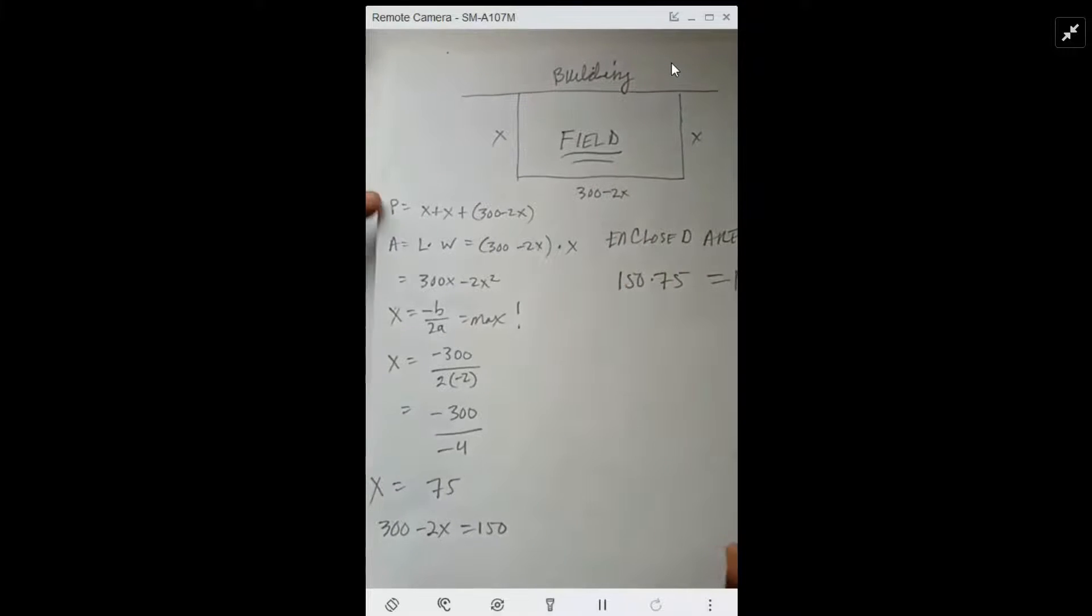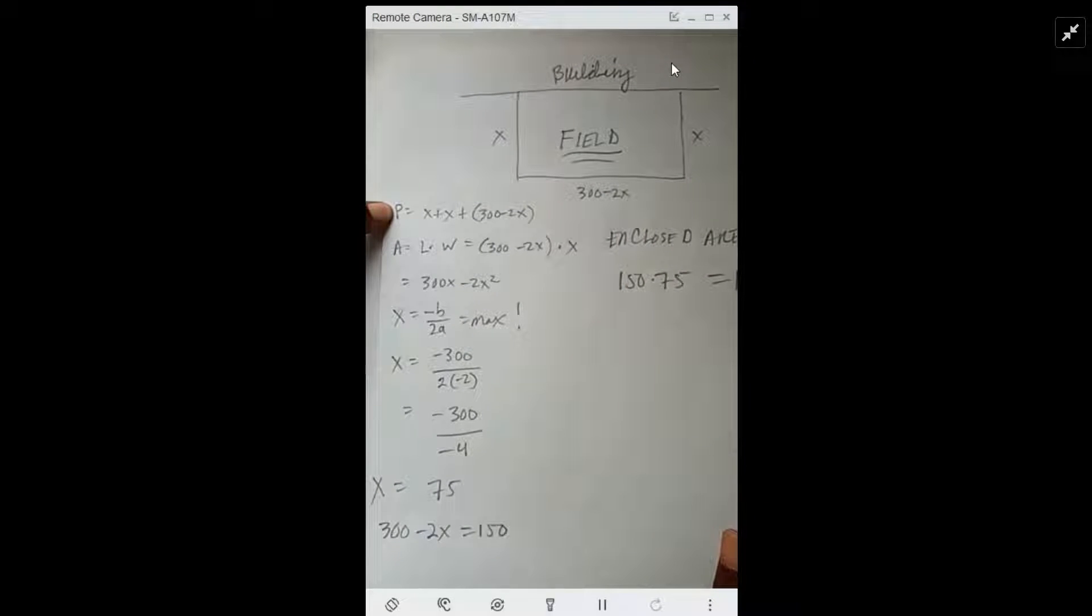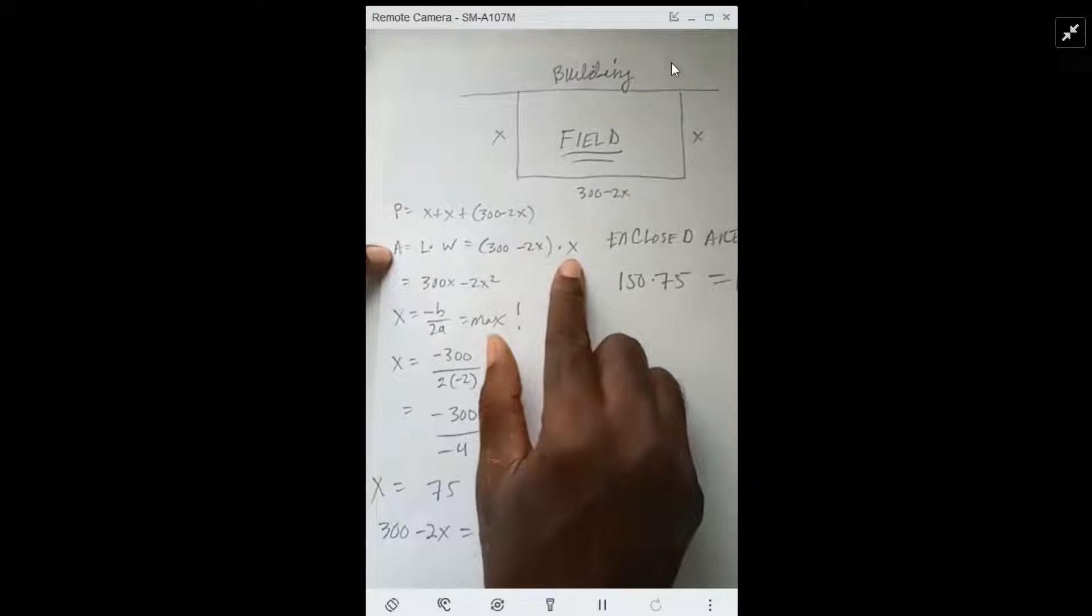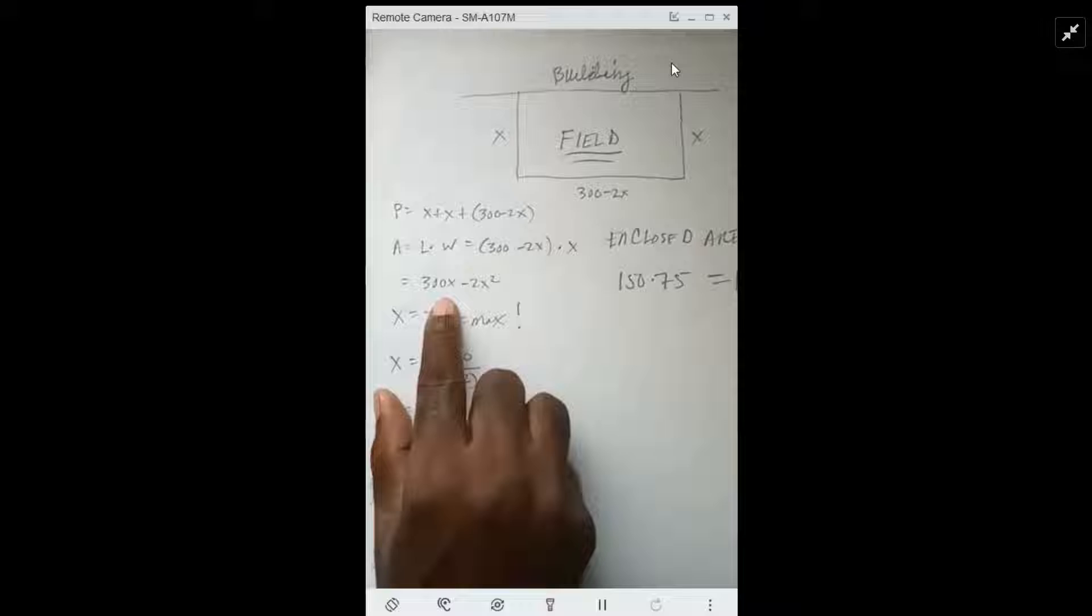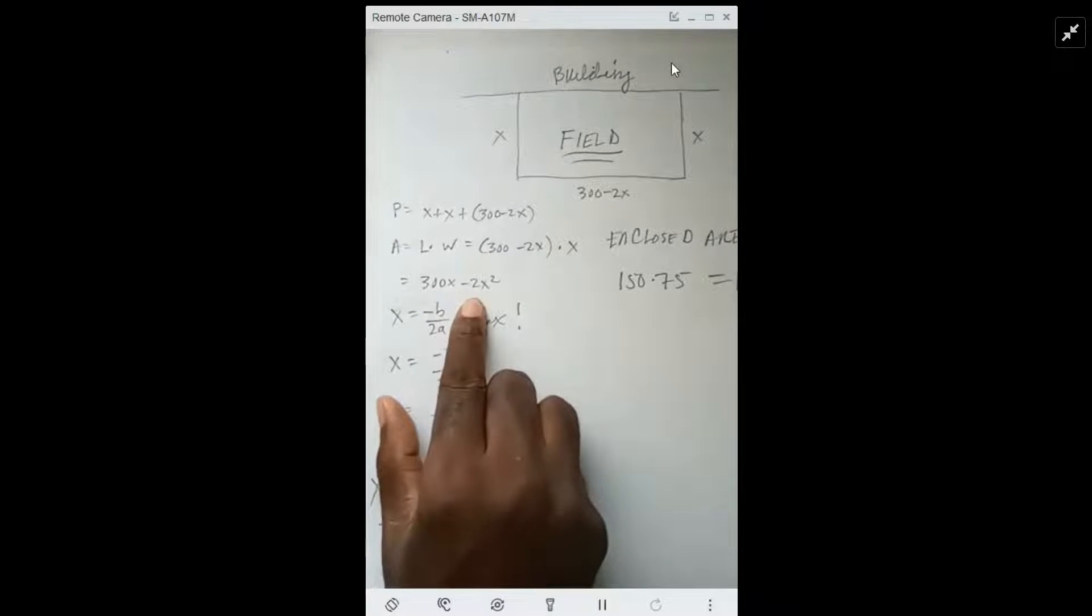Now the perimeter is x plus x plus 300 minus 2x, and the area is going to be length times width which is going to be 300 minus 2x times x. That's going to give us 300x minus 2x squared. We see that the coefficient of x squared is negative.